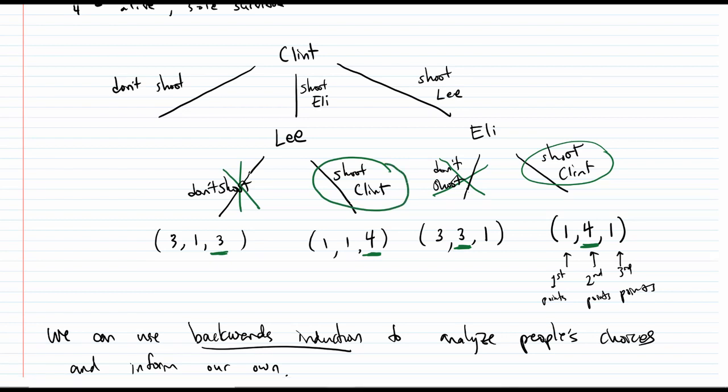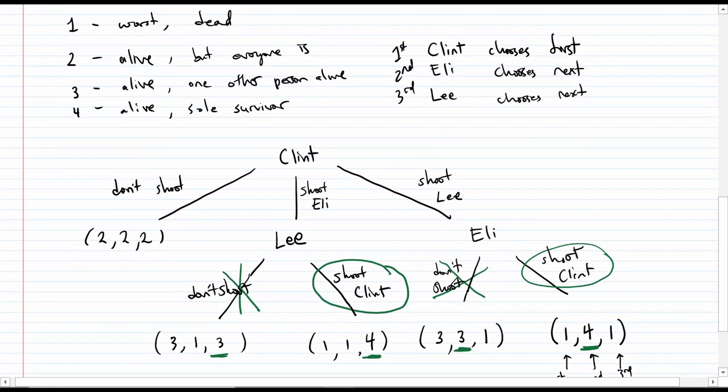What about Lee? Well, Lee is the third player, and so he's comparing these scores in the third slot. And similarly to Eli, if Lee doesn't shoot, then there's going to be two people left. And if he does shoot Clint, then he'll be the sole survivor. So again, his payout is larger if he shoots Clint. And so what's the idea, and what makes this truel so tricky, is that if you eliminate one of the characters, then the other character is just left with themselves and you, and they're going to take the shot at you because you're the only one left standing. So Clint realizes that if he shoots either Lee or Eli, he's going to be shot himself.